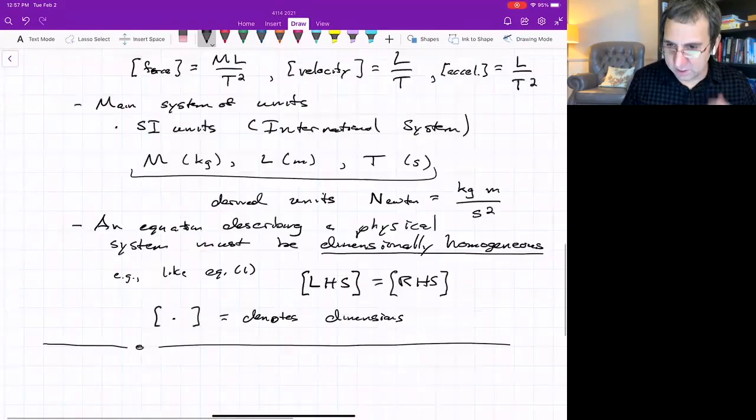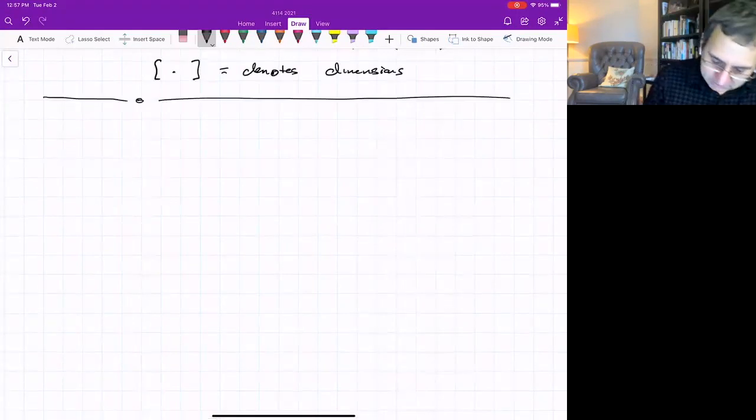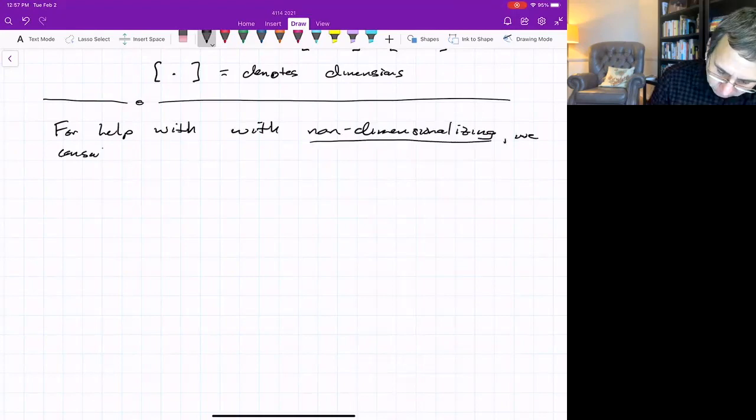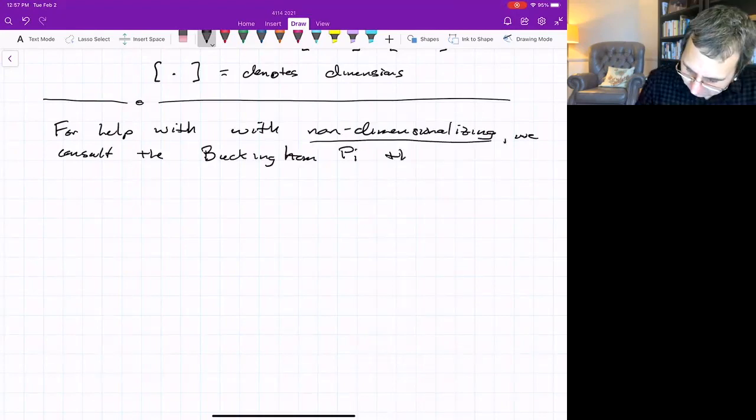Everything becomes non-dimensionalized. So instead of there being theta and time and five parameters, maybe we'll have something less when we non-dimensionalize this equation of motion. Toward that end, we consult the Buckingham-Pi theorem. For help with non-dimensionalizing, we consult the Buckingham-Pi theorem.